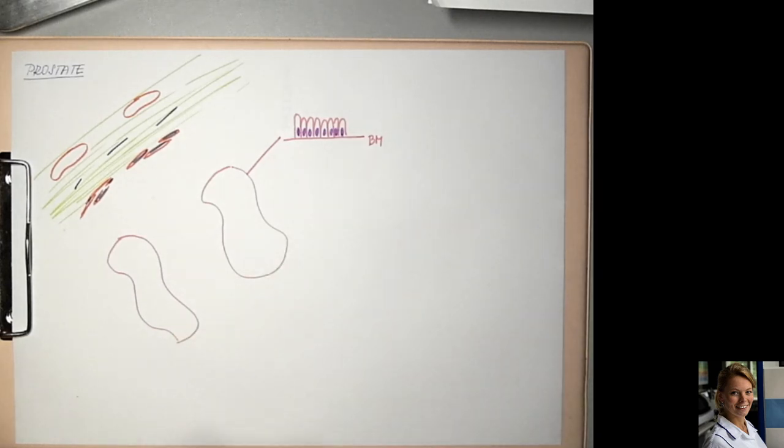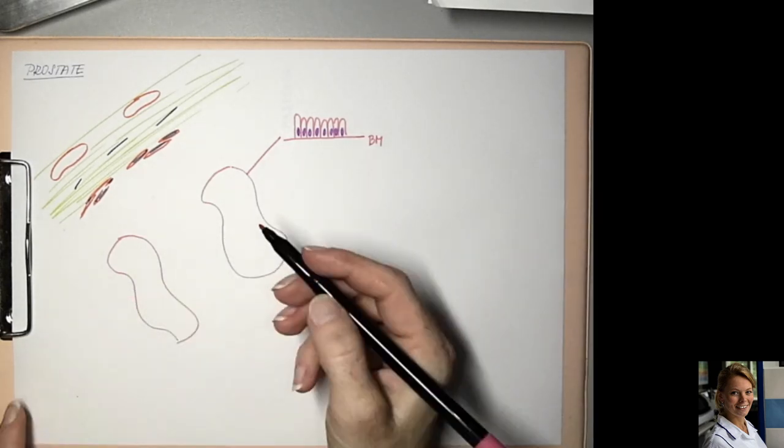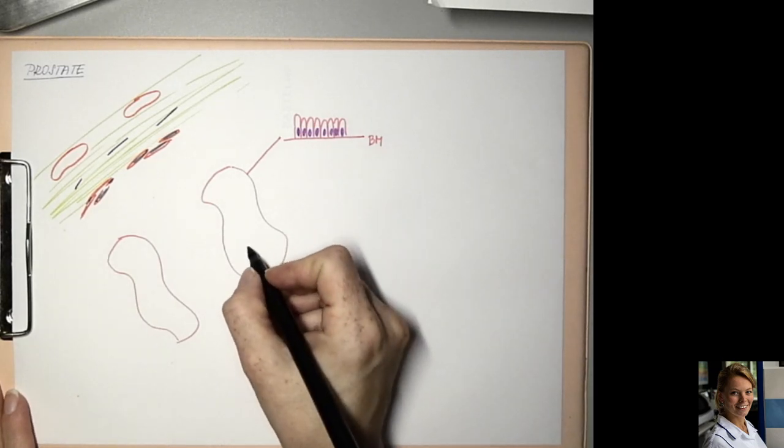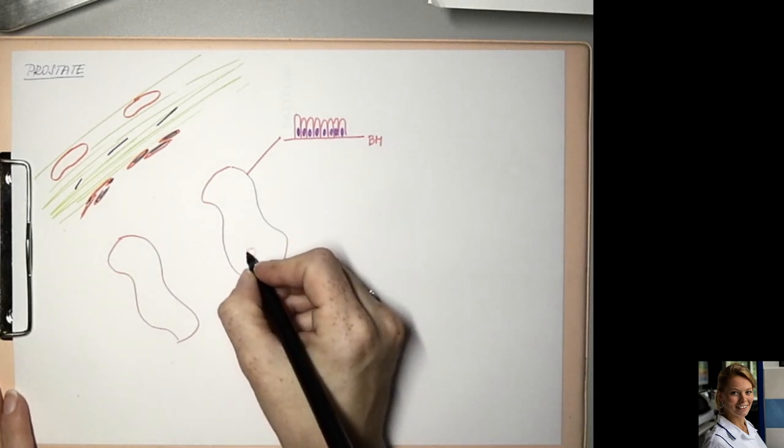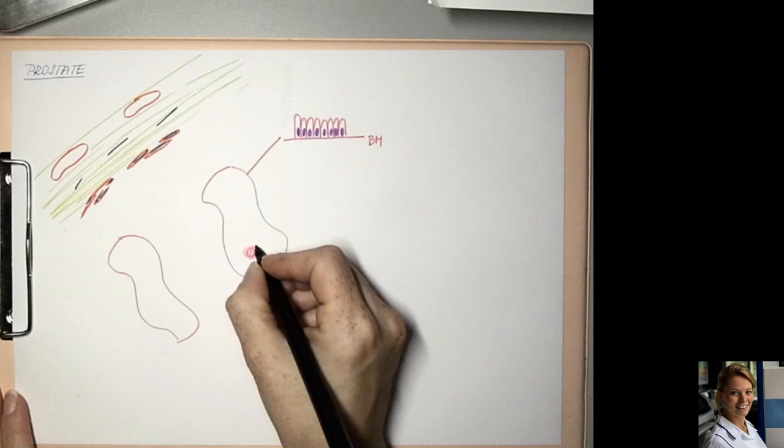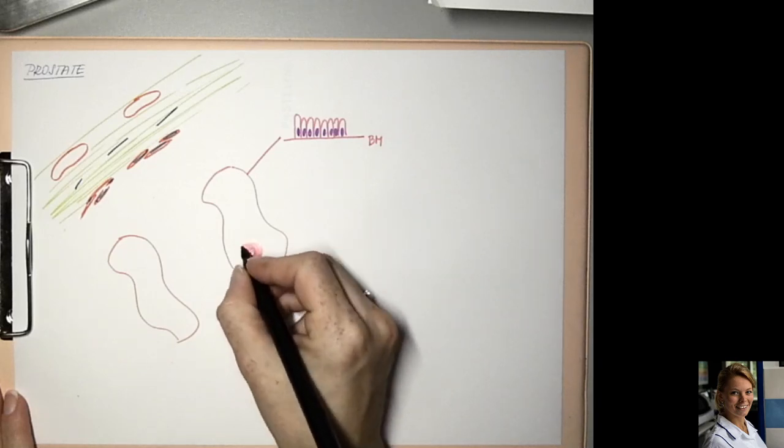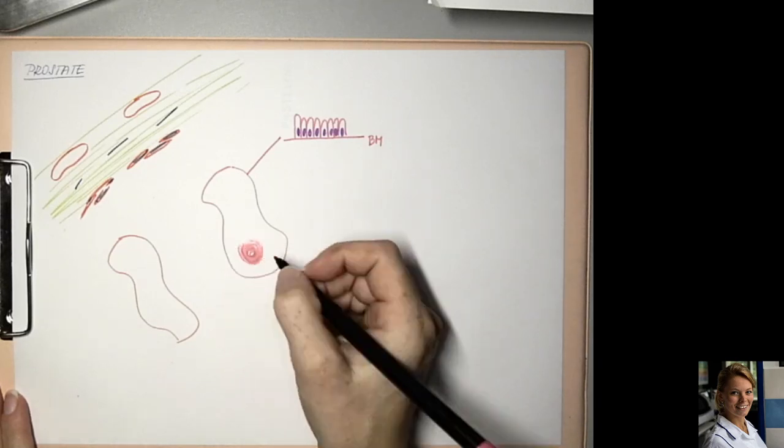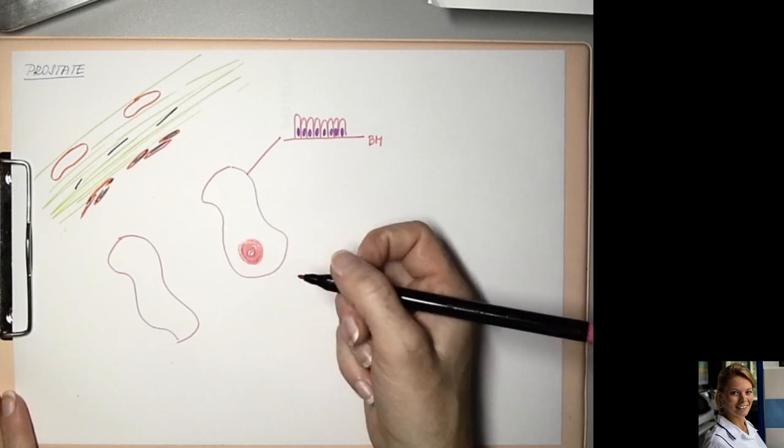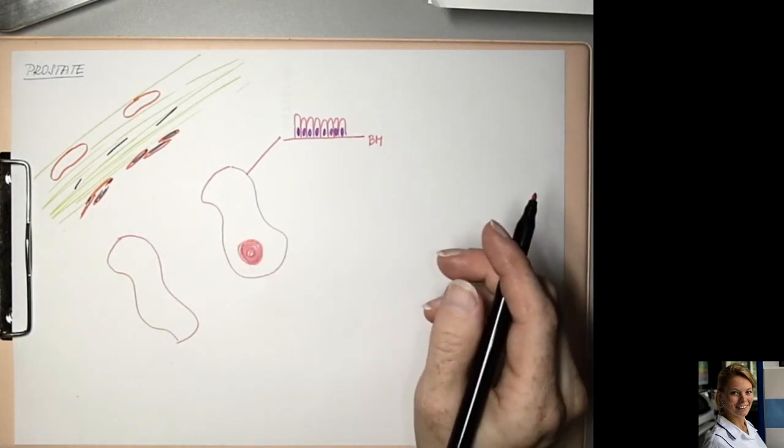And inside of these glands you can find a spheric structure. This structure is called corpus amylaceum or many corpora amylacea.